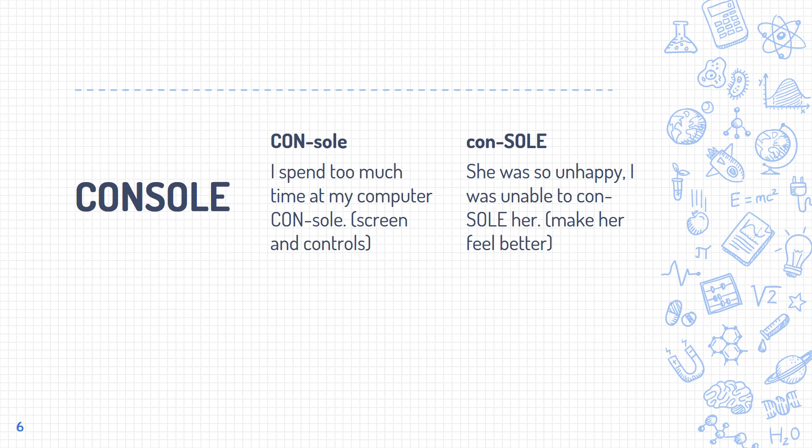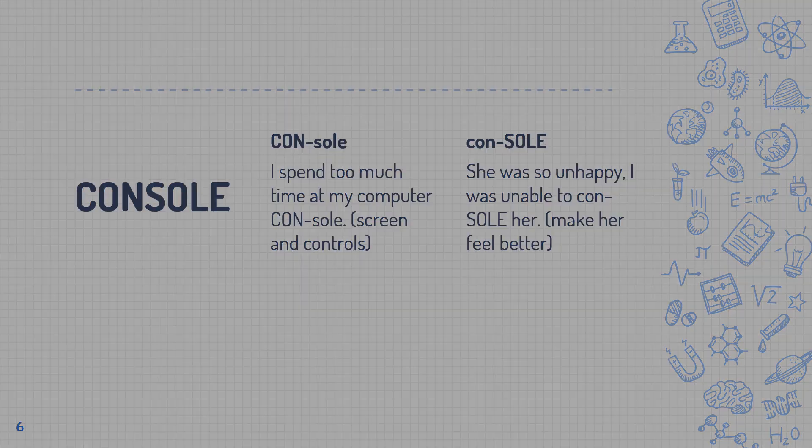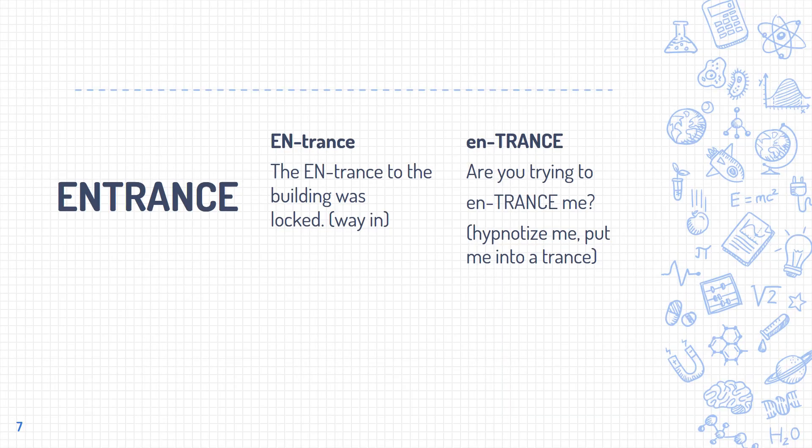For example: 'She was so unhappy I was unable to console her.' Another example is 'entrance.' If we put the stress on the first syllable, 'ENtrance,' it means a way in — 'The entrance to the building was locked.' If we put the stress on the second syllable, 'enTRANCE,' it means to hypnotize — 'Are you trying to entrance me?'